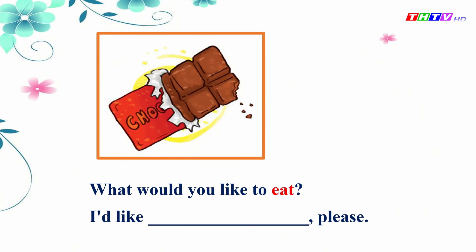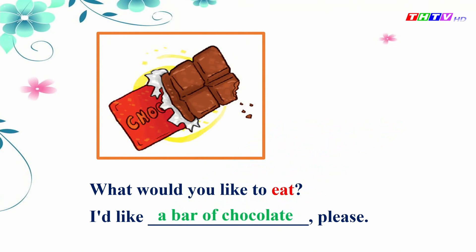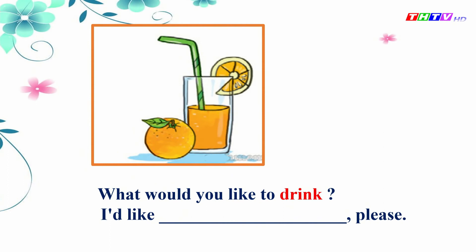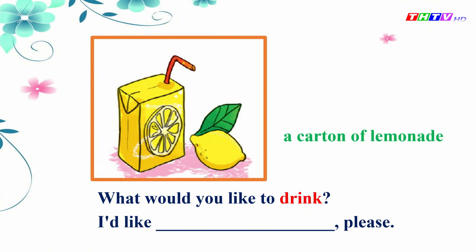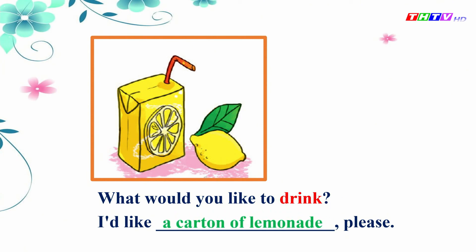Next one. Look. A bar of chocolate. Listen — I ask and you answer. What would you like to eat? I'd like a bar of chocolate, please. Very good. Next one. A glass of orange juice. What would you like to drink? I'd like a glass of orange juice, please. Well done. Next one. A carton of lemonade. You ask and I answer. What would you like to drink? I'd like a carton of lemonade, please.